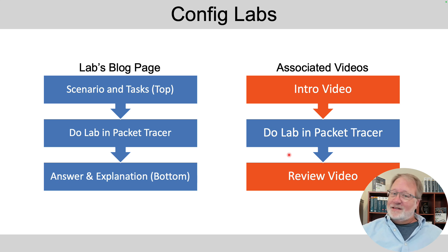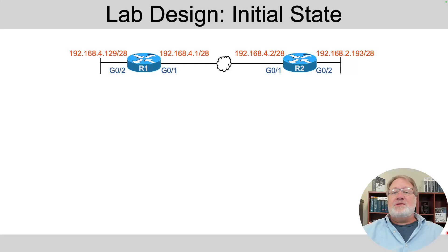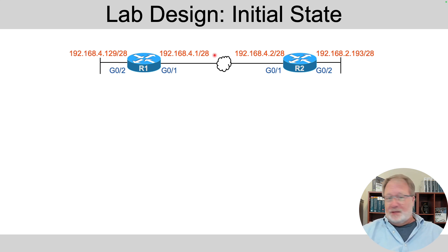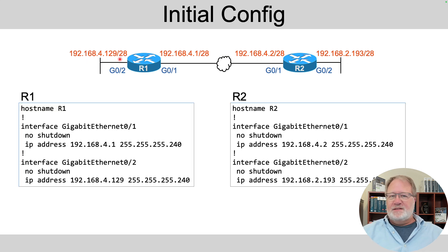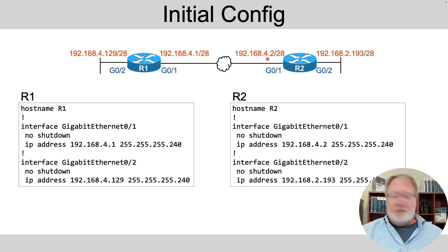All right, let's talk about this lab. The network topology is two routers only with a WAN link between them. The interfaces are up — all interfaces in this diagram are up at the beginning state of the lab. You see the IP addresses and masks used in this design spread across the diagram, along with the interface IDs. The matching configuration is IP addresses only with the interfaces no shutdown.